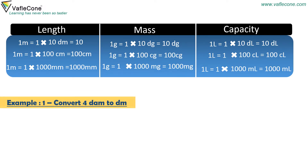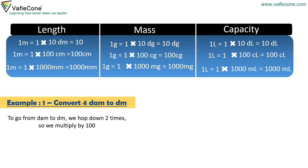Example 1. Convert 4 decameters to decimeters. To go from decameter to decimeter, we hop down 2 times, so we multiply by 100. 4 decameters is equal to 4 × 100 decimeters, which equals 400 decimeters.